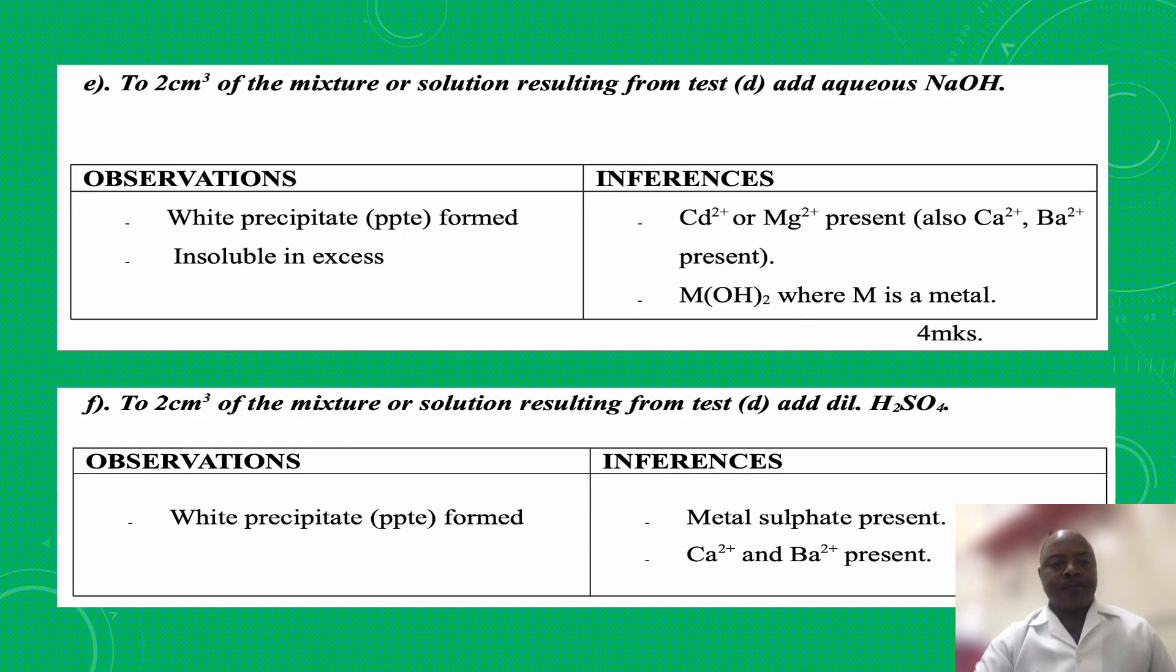Part E: To 2 cm3 of the mixture or solution resulting from test D add aqueous sodium hydroxide. My observation was white precipitate formed. I told you in my introductory part of the video, when precipitates are formed, it is obligatory to add to excess, to add aqueous sodium hydroxide to excess to ensure whether the precipitate can dissolve in excess.